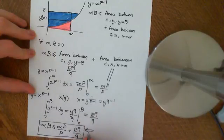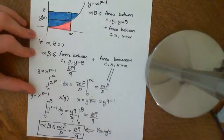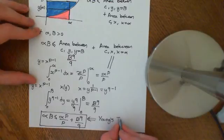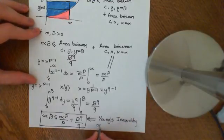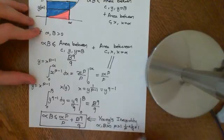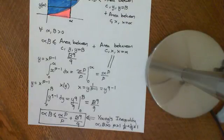So this is Young's inequality, holding for any positive real numbers alpha and beta, any p greater than 1, with 1 over p plus 1 over q equal to 1. We will use this in the proof of Hölder's inequality, which is covered in the next video.